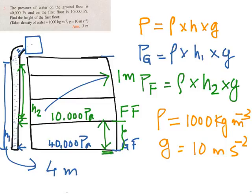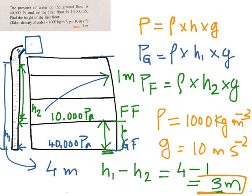This is nothing but h1 minus h2. So now h1 is 4 and h2 is 1, so the answer is 3. The height of the first floor is 3 meters. This is our answer to the question.